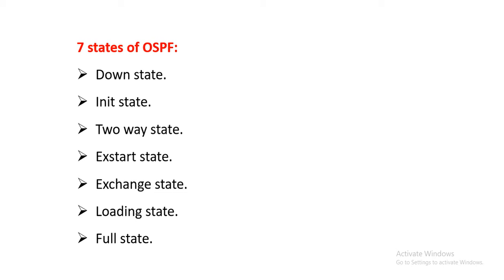There are seven states in OSPF: Down state, Init state, Two-way state, Exstart state, Exchange state, Loading state, and Full state. We will cover these in detail practically in an upcoming session, but here we will go through the theoretical view.